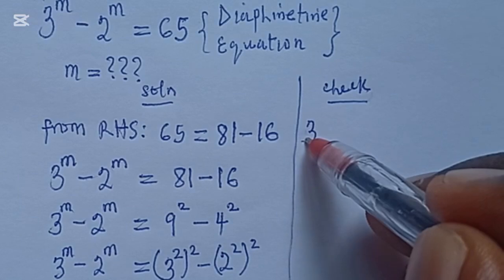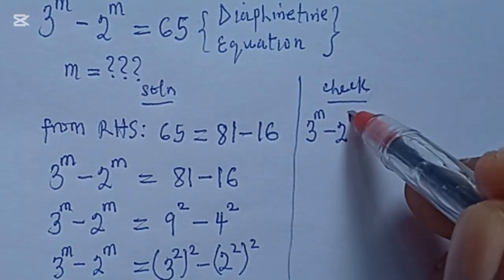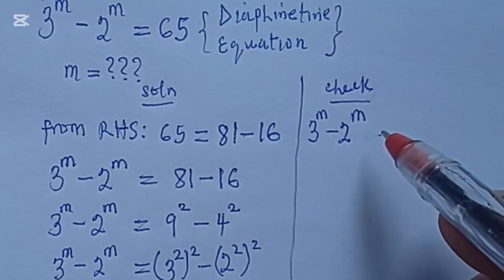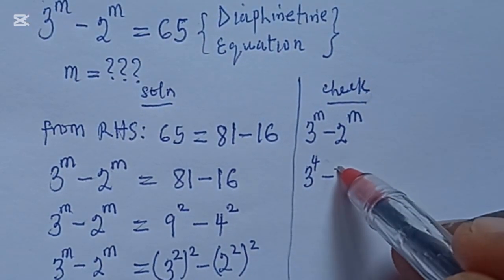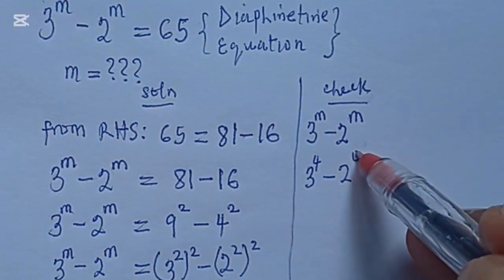So 3 to the power of m minus 2 to the power of m. When you fix m is equal to 4, we get 3 to the power of 4 minus 2 to the power of 4.